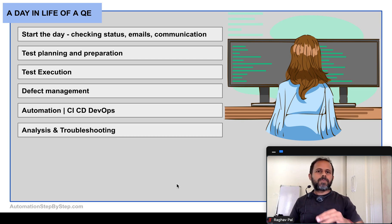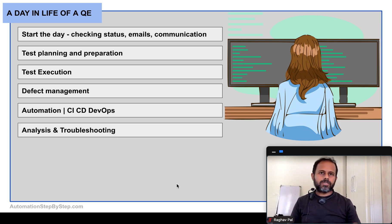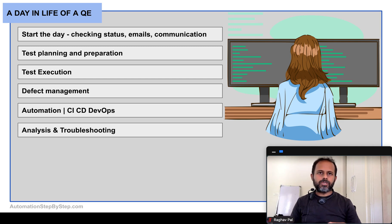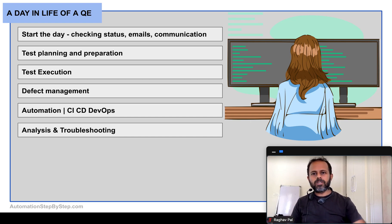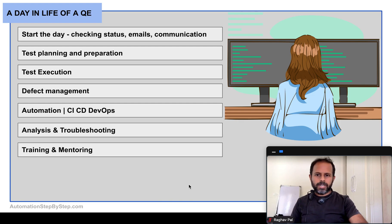The next part is analysis and troubleshooting. Throughout the testing and QA phase, whenever there are any issues — whether technical, non-technical, team issues, or communication issues — you will have to analyze, troubleshoot, and fix them. This is also a regular part of daily life for a quality engineer.